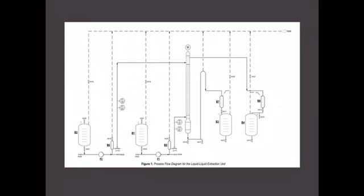The following are general start-up procedures. First, ensure that all valves are initially closed. Next, turn on the main switch at the control panel. Then open the ventilation line valves: HV18, HV19, HV20, HV21, HV11, and HV13.